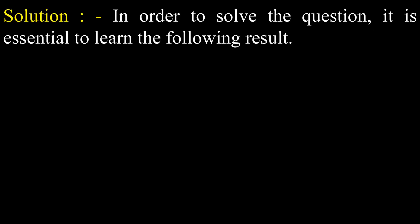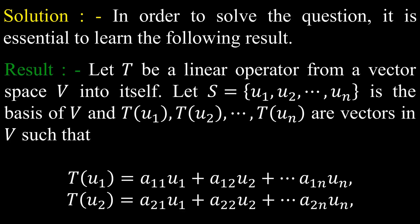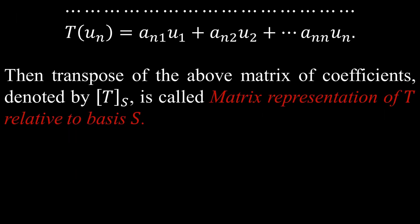In order to solve the equation, it is essential to learn the following result. Let T be a linear operator from a vector space V into itself. Let S = {u1, u2, ..., un} be the basis of V, and T(u1), T(u2), ..., T(un) are vectors in V such that T(u1) = a11·u1 + a12·u2 + ... + a1n·un, T(u2) = a21·u1 + a22·u2 + ... + a2n·un, and so on up to T(un) = an1·u1 + an2·u2 + ... + ann·un. Then the transpose of the above matrix of coefficients, denoted by Ts, is called the matrix representation of T relative to the basis S.